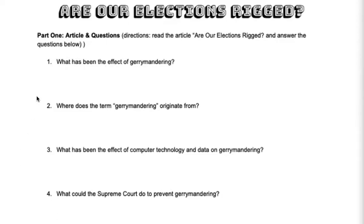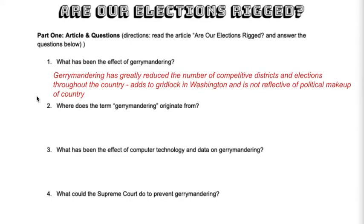Question number one: what has the effect of gerrymandering been? The answer is that gerrymandering has greatly reduced the number of competitive districts and thus elections. It has made it almost impossible for the party not in power to have any chance of winning and turning a district from one political party to the other. It adds to gridlock in Washington, and it's not actually reflective of how many people hold certain political beliefs throughout the country — which does hurt our democracy.